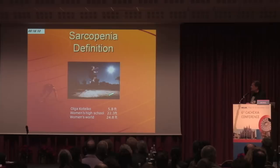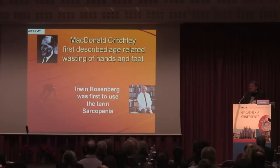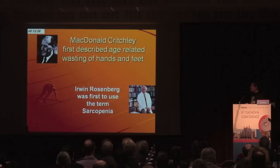So, sarcopenia. Here is classical pre-sarcopenia. This is the world champion, 90-year-old long jump — five foot eight inches — so much less than the women's high school record. Does she have sarcopenia? Clearly she's lost muscle function, no question about it. The concept of sarcopenia actually started with MacDonald Pritzley, a neurologist in England, who first described age-related wasting of hands and feet. He pointed out that muscle wasting starts at the periphery as you get older and moves upwards, suggesting a role for nerves as well as muscle.